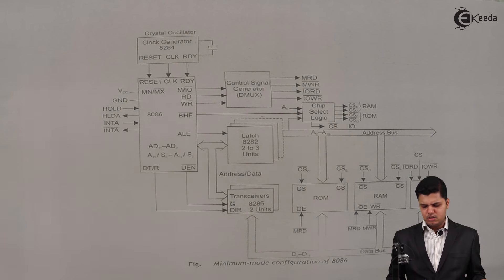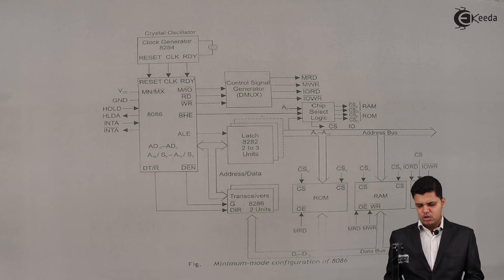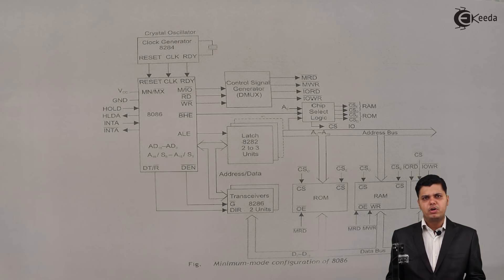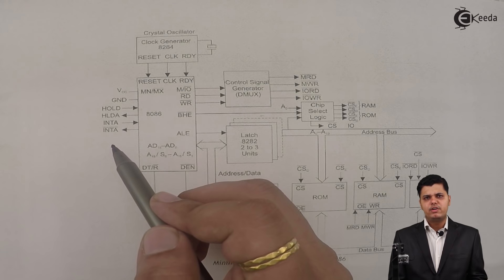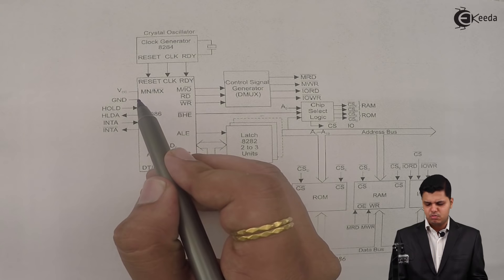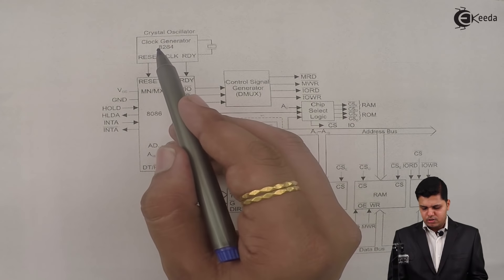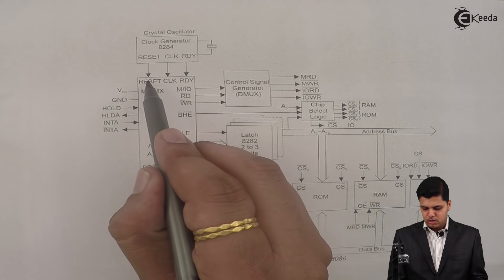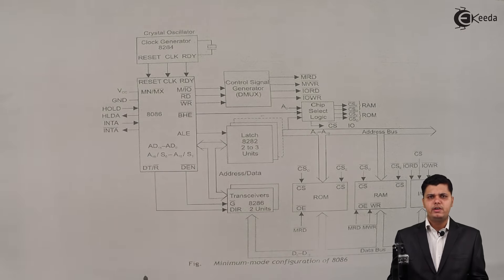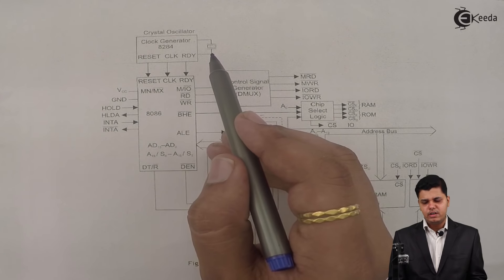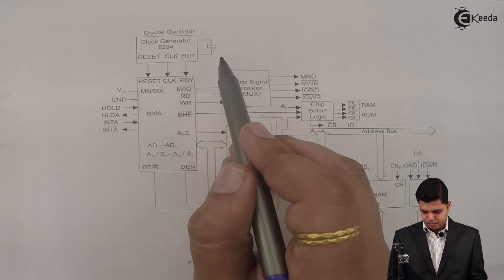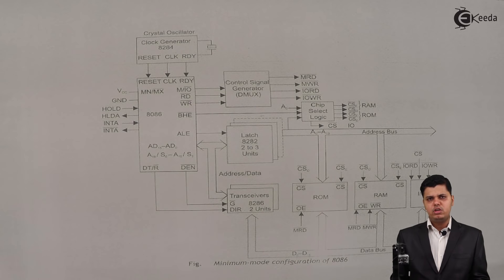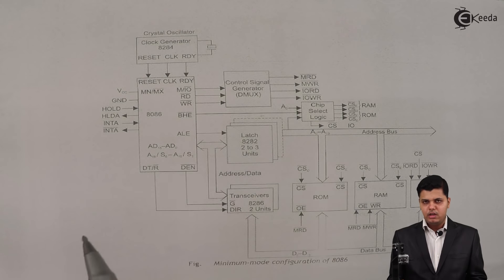We are going to start with the minimum mode configuration of the 8086 microprocessor. The important part of this minimum mode configuration is that MN/MX bar is connected to VCC, which signifies the system is in minimum mode. The clock generator circuit, 8284, is used for providing reset, clock, and ready signals to the 8086 microprocessor, and it gets the oscillator frequency through the X1 and X2 pins. We are going to see what data lines carry in each respective T-state.